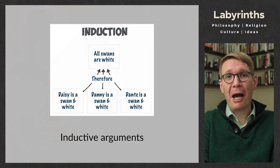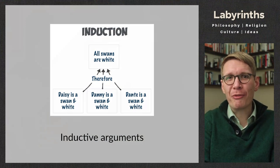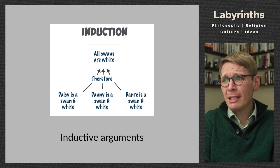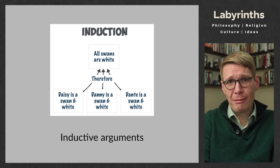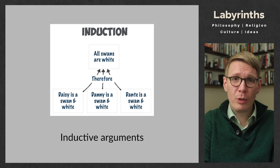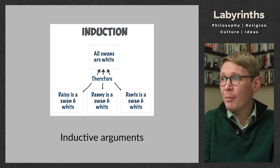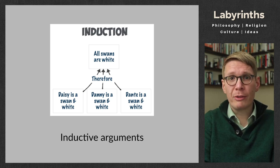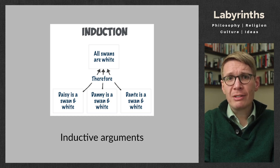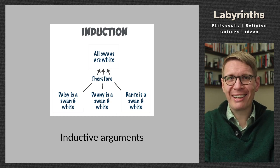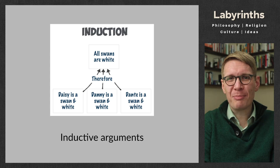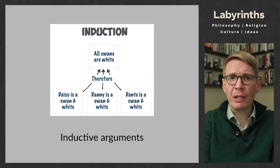So on our slide here, I Googled induction and came up with the following image. Daisy is a swan and is white. Danny is a swan and is white. Dante is a swan and is white. Therefore, all swans are white. We're going to look at this style of argument, because it's actually far more common than deductive argumentation. We draw lots of conclusions about the world around us, vitally and very importantly, based on induction.